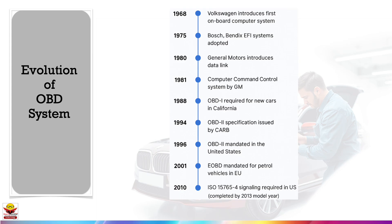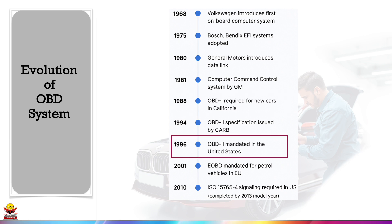Now let's see a small history of OBD evolution to gain the importance of this topic in the automotive world. In 1988, California was the first to mandate the implementation of a basic OBD system, known as OBD-1, to monitor vehicle emissions and ensure compliance with environmental regulations. Fast forward to 1996, OBD-2 became mandatory for all cars and light trucks sold in the United States. This advancement standardized diagnostic trouble codes.